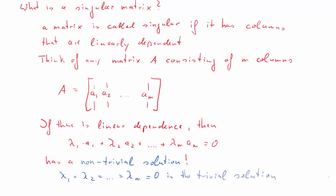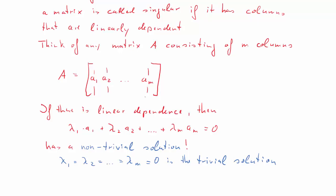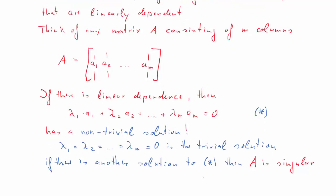Now what is a trivial solution? Now if all the lambdas are 0, then obviously that equation is true. So that's the trivial solution. So if there is a solution to that equation that does not set all the lambdas to 0, so if there's another solution to the non-trivial solution to this asterisk equation, then we call the matrix A singular. Then we say A is singular. And if that is the case, A inverse does not exist. So that's very important.